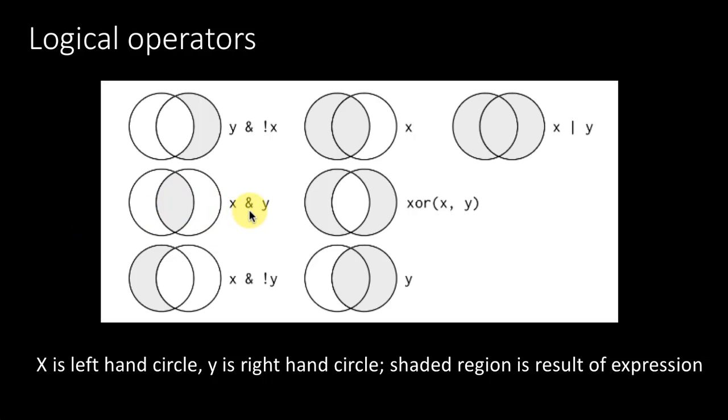If you say x and y, meaning what part of this diagram belongs to both x and to y, obviously it's the intersecting region. Now there is an operator called the exclusive or operator. When you said x or y, it also includes the portion which is x and y. But when you say exclusive or, that's what the xor operator is, we will rarely have to use it.